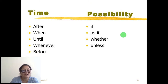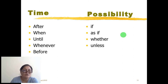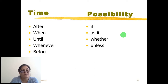Time — we express time with the following conjunctions: after, when, until, whenever, before. And possibility is expressed by: if, as if, whether, unless.